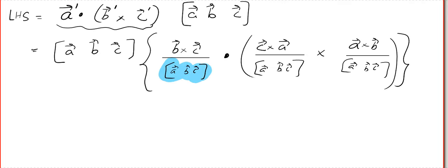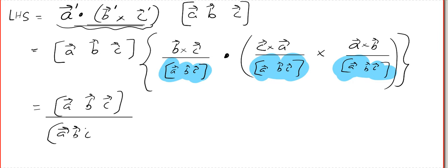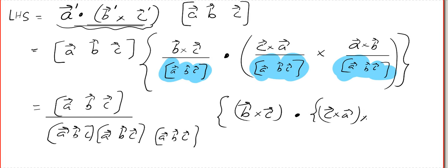Now, what happens is can you see there is a dot and a cross. What happens here is this a b c will come out from everywhere or you can imagine the STP corresponds to a determinant. So, from every row this STP will come out. Basically you are going to get a b c divided by a b c times a b c times a b c. And the remaining part will be b cross c dot c cross a cross a cross b. So, these two will get.